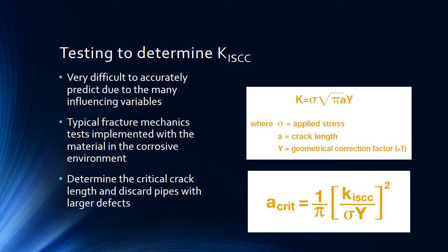It's very difficult to accurately predict the stress concentration factor at which stress corrosion cracking will occur. However, typical fracture mechanics tests are implemented, except the specimen will be placed in that corrosive environment. Once this critical value is determined, a critical crack length can then be determined as well, and pipes with larger defects than that can be discarded.